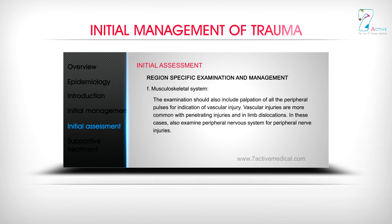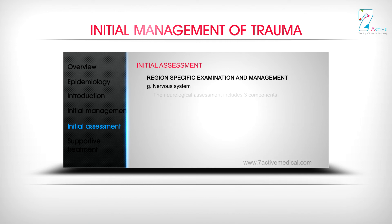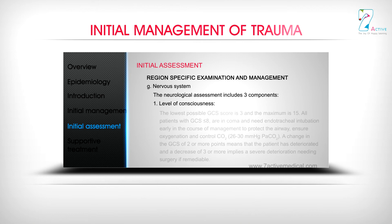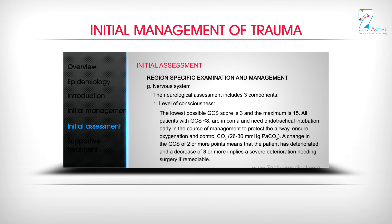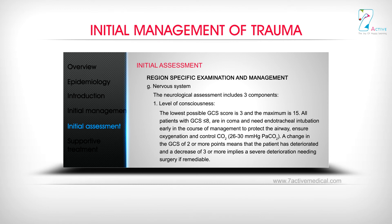In cases of penetrating injuries and limb dislocations, also examine the peripheral nervous system for peripheral nerve injuries. The neurological assessment includes three components. First, level of consciousness: the lowest possible GCS score is 3 and the maximum is 15. All patients with GCS less than or equal to 8 are in coma and need endotracheal intubation early to protect the airway, ensure oxygenation, and control CO2 (target PaCO2 of 26–30 mmHg). A change in GCS of 2 or more points means the patient has deteriorated; a decrease of 3 or more implies severe deterioration needing surgery if remediable.